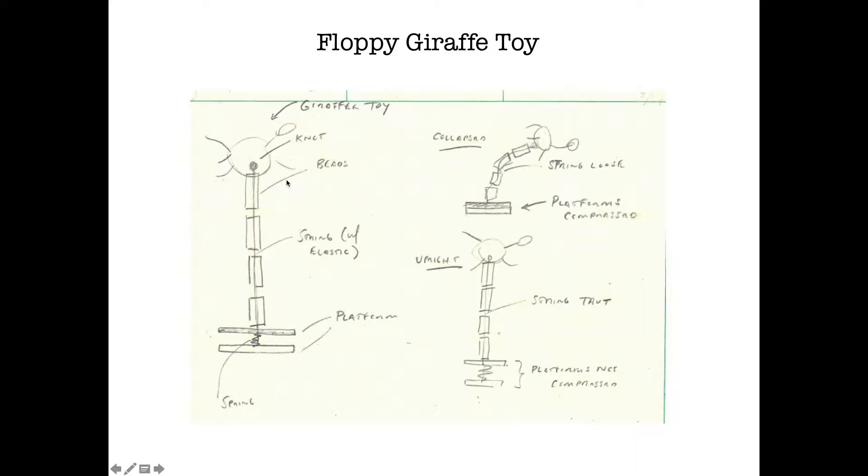On components I'm doing a pretty good job and same with function. So on components you basically have beads and spring. You have a platform that has a spring in it and when you compress the spring the beads are gonna go loose and it's gonna collapse and when the platform is not compressed the spring is taut and the giraffe stays upright. So I would probably give myself two points on the components on the features and two points on the function but where I could have done some improvement is on the overall shape and also the scale of the object. Reflect on your own drawings in that regard.